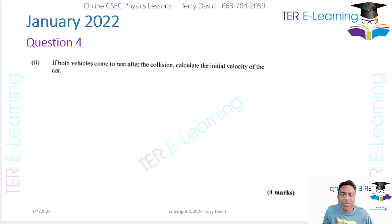So if both vehicles come to rest after the collision, calculate the initial velocity of the car. So remember, we had the car was traveling this way, and we don't know what that velocity was. But we knew the mass. The mass was 630. So this here was 630 kg, and the truck was traveling at 20 meters per second, and the mass was 945 kilograms.